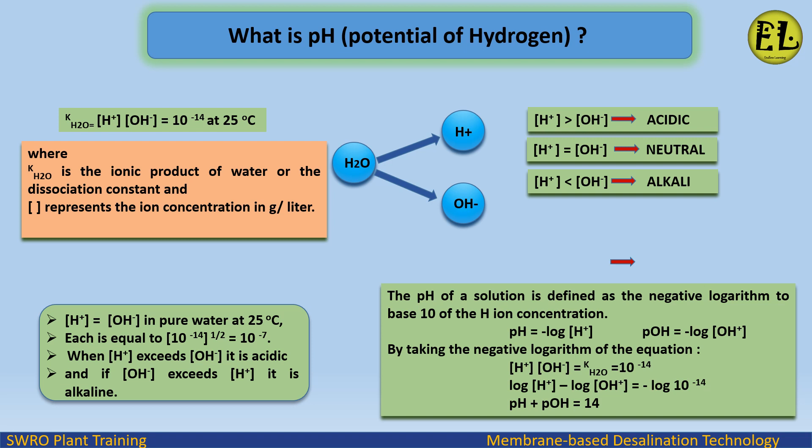To summarize the acid-base conditions: when [H⁺] > [OH⁻], the solution is acidic; when [H⁺] = [OH⁻], the solution is neutral; when [H⁺] < [OH⁻], the solution is alkaline.